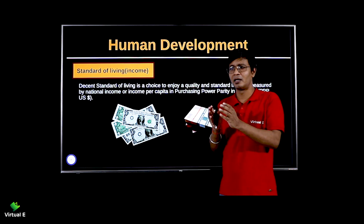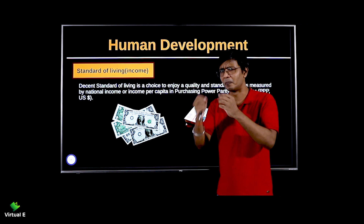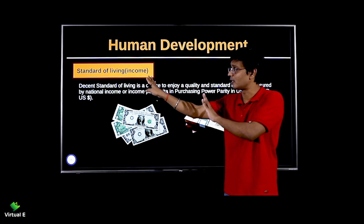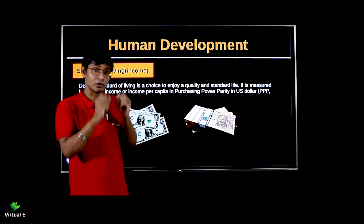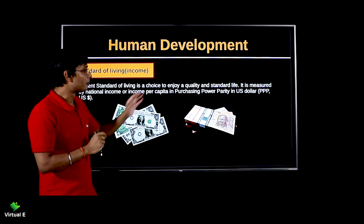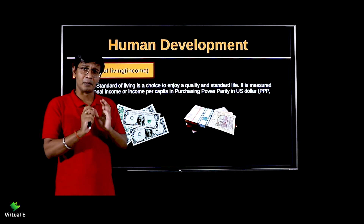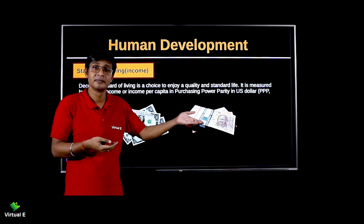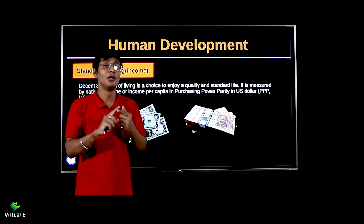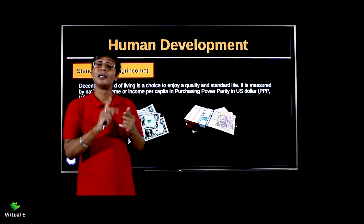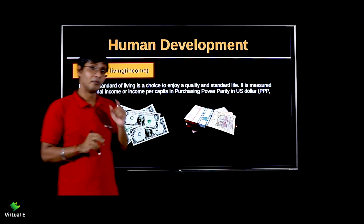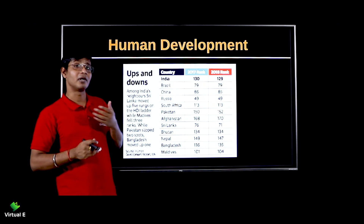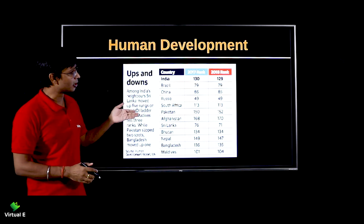The third component in HDI is standard of living, which is income — measured as per capita income in purchasing power parity. Simply, how much money you have in hand — more money means you can buy more things. So UNDP, on the basis of health, education, and income, files one report, and based on that report we see whether a country is developed or developing.